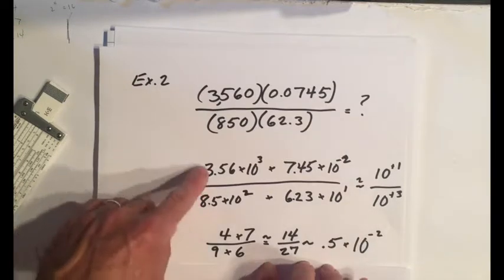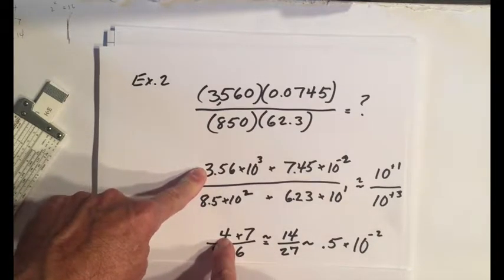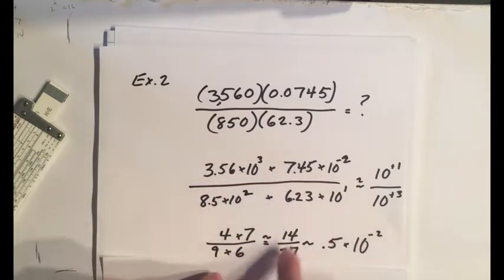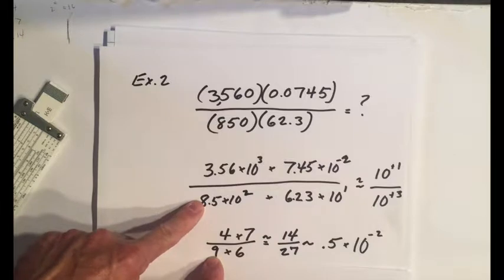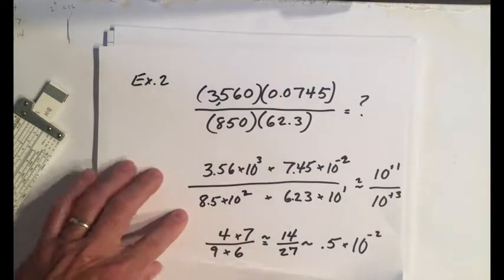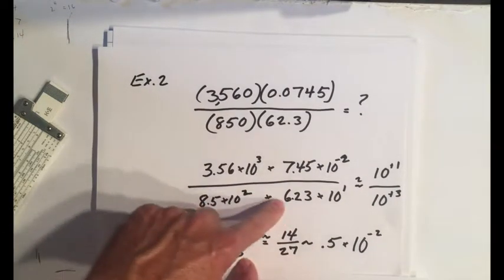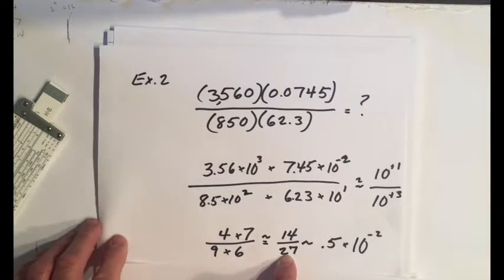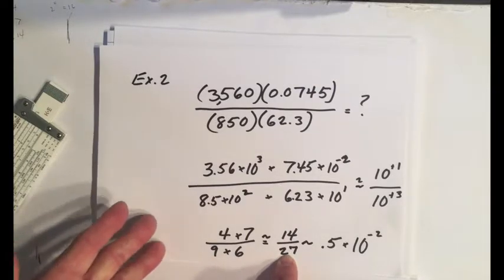Likewise, we can just do the simple estimation, round off to the nearest numbers, what I usually do. 3.56 is 4, 0.745 is 7, 8.5 is close to 9 or you could do 8, and then 6.23 obviously is 6. And you can simplify, cancel out 2s and you get about 14 over 27, which is close to 0.5.